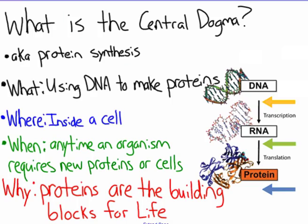The first question we need to answer is: what is the central dogma and why is it so important? Another name for the central dogma is protein synthesis, because in this process we are taking your DNA and changing it into proteins. DNA is the blueprint for a living organism — if I have a blueprint for a two million dollar mansion, I don't actually have the mansion. I have the instructions to make it, but I still need the materials and workers to build the house.